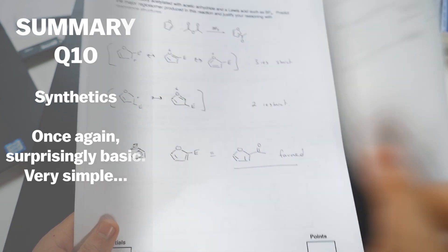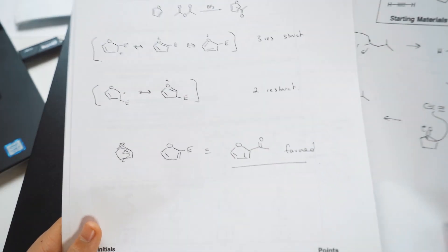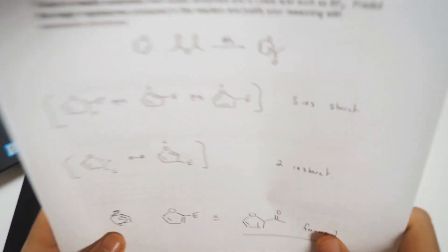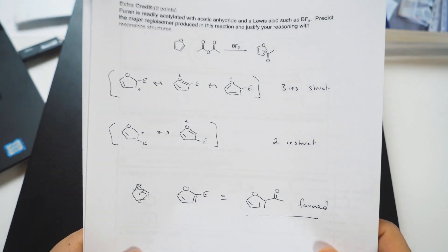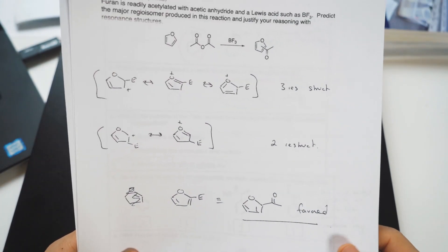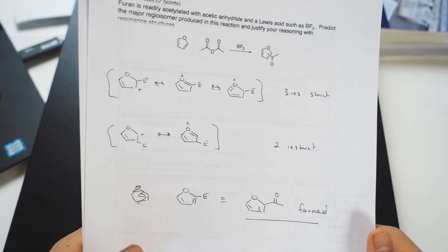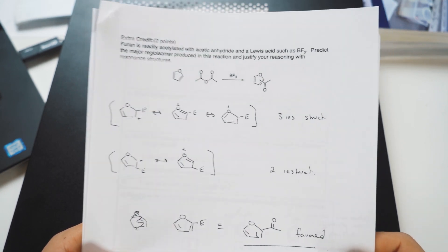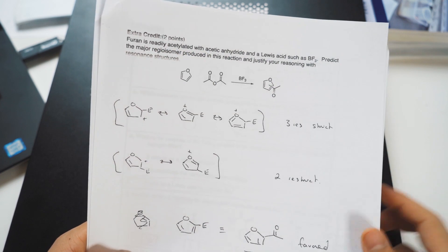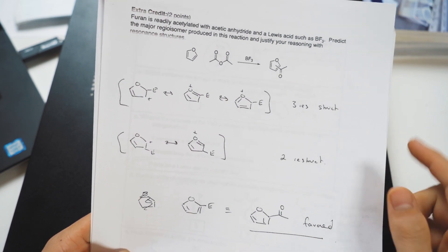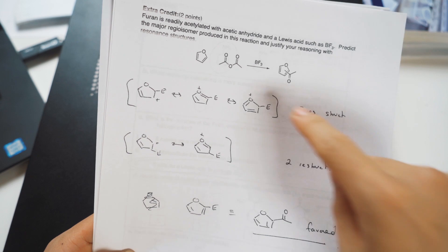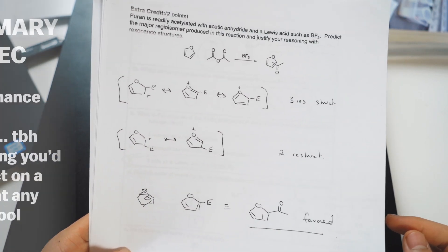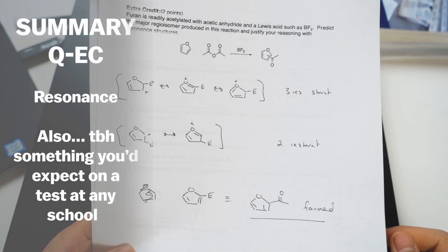And now the extra credit problem, also pretty easy. It just wants you to determine what's the most stable product. And that would be done through resonance structures. And it even tells you, justify your reasoning with resonance structures. Here we have three resonance structures. Here we have two. So we know that this product is favored. So that extra credit problem wasn't too difficult either.